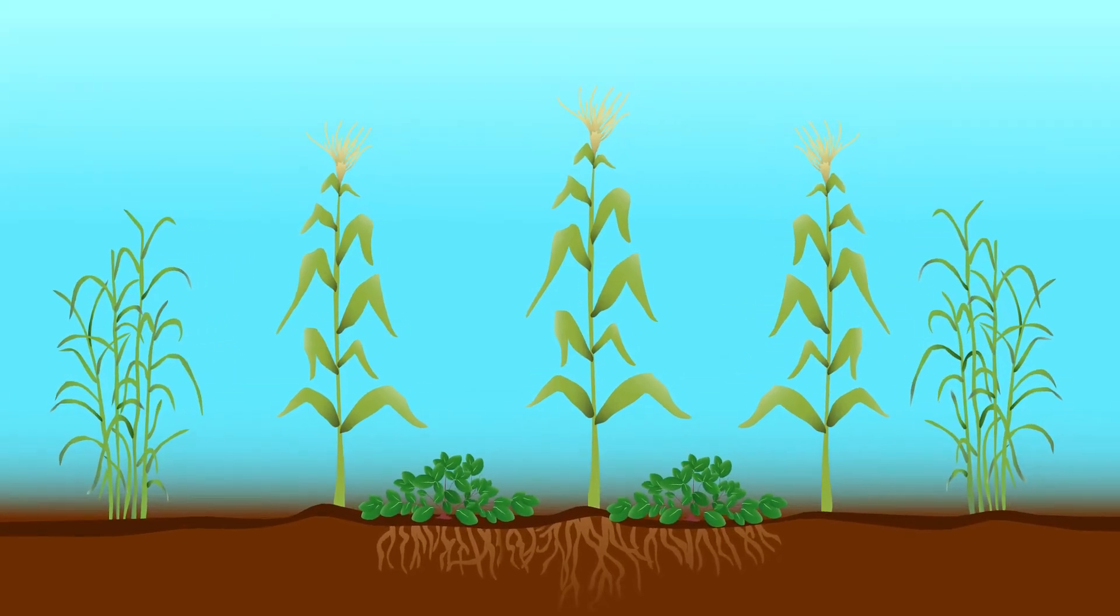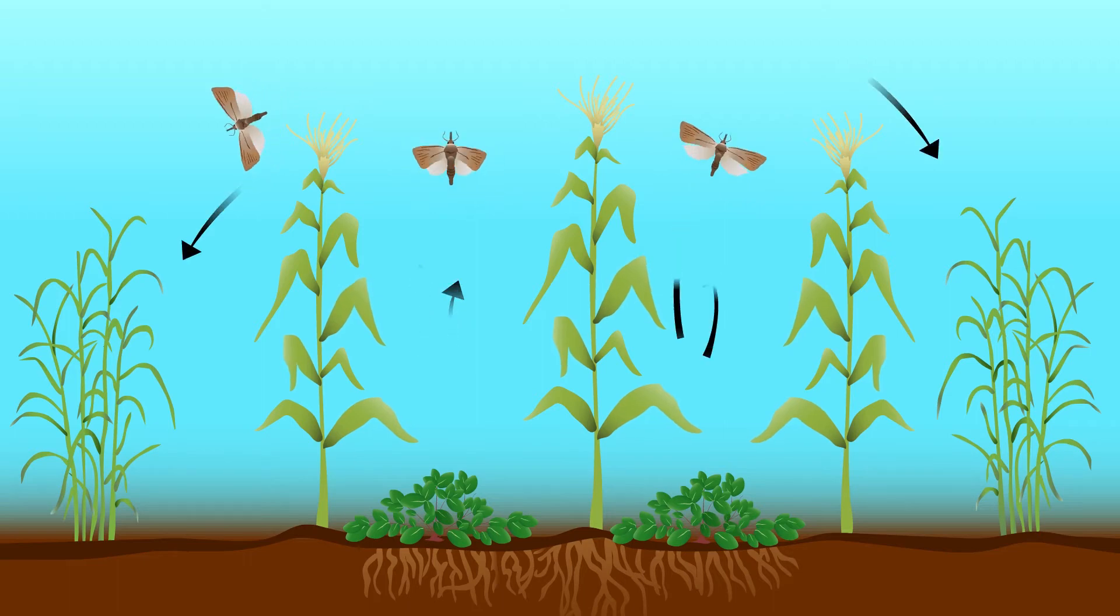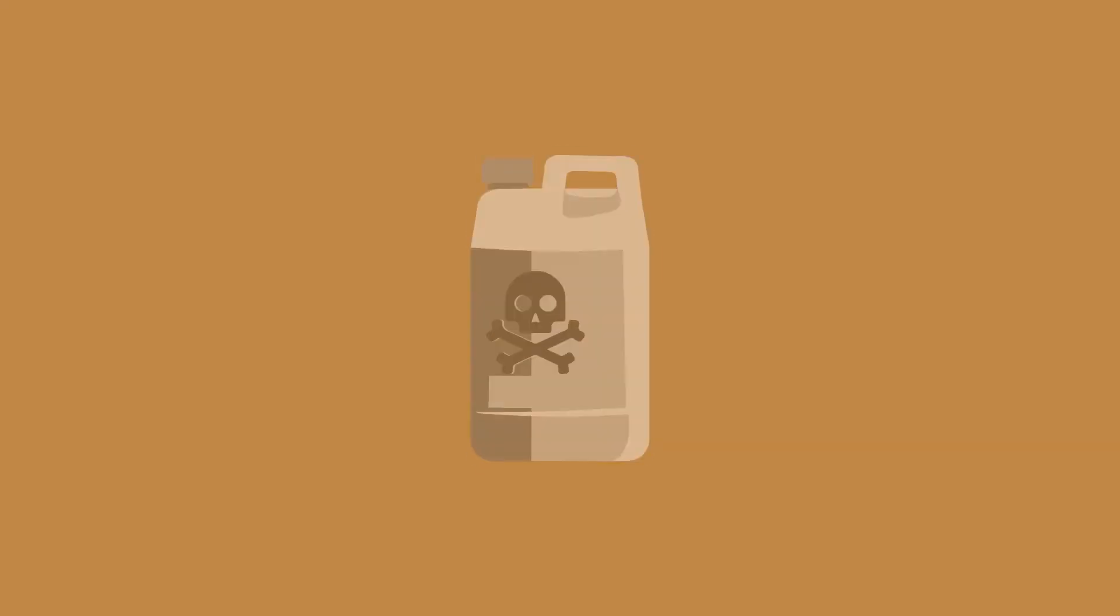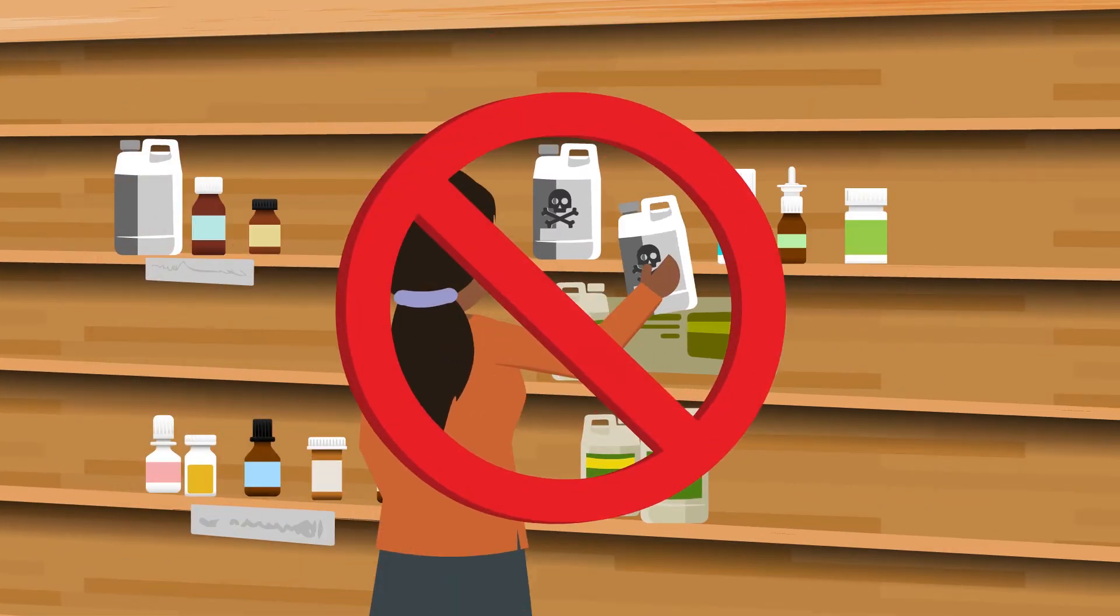To prevent your maize from being attacked by stem borers, you can use a technique called push-pull. This technique does not use any pesticides, which are costly and can be harmful to you and natural enemies that eat pests.